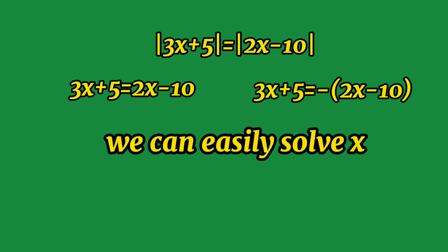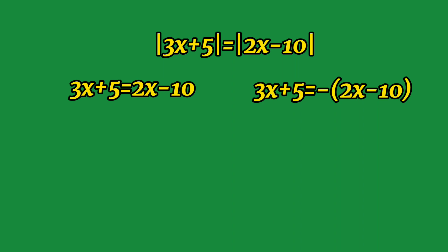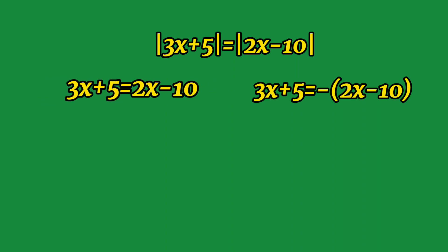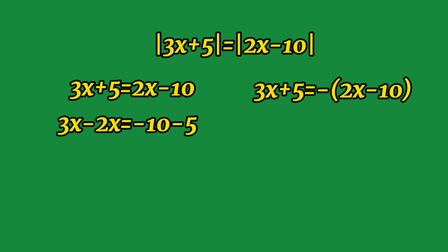Let's solve, starting from the first equation: 3x + 5 = 2x - 10. Transposing 2x to the left and 5 to the right, we have 3x - 2x = -10 - 5. Performing the operation, we get x = -15.